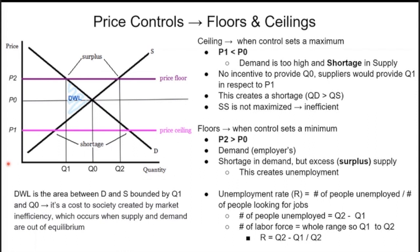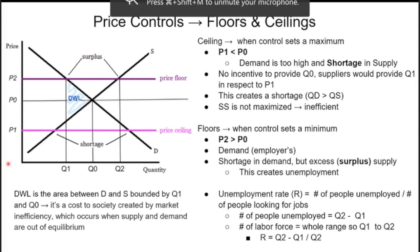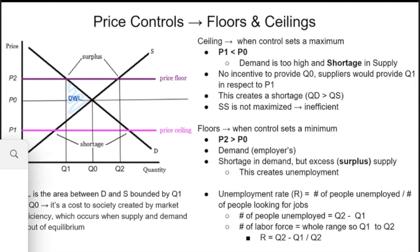Price floors set a minimum — you cannot go lower than that. Price 2 is greater than price 0, so we have a shortage in demand but excess supply, which creates unemployment because fewer people want to hire and many more want to be hired. The unemployment rate R equals the number of people unemployed over the labor force — where unemployed equals Q2 minus Q1, and labor force equals Q2. So R = (Q2 - Q1) / Q2.